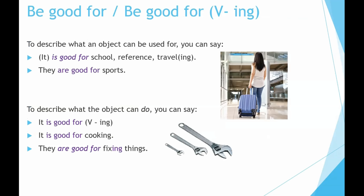'Be good for' or 'be good for verb-ing.' To describe what an object can be used for, you can say: 'It is good for school, reference, travel, or traveling.' 'They are good for sports.' To describe what the object can do, you can say 'it is good for verb-ing.' For example: 'It is good for cooking.' 'They are good for fixing things.'